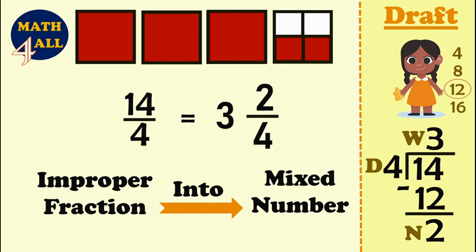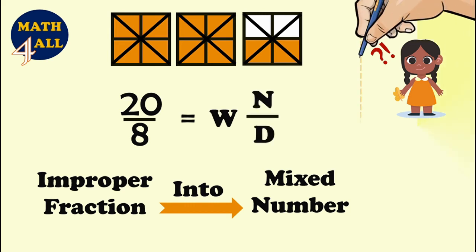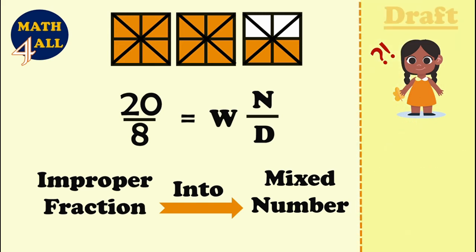Now let's solve one more example. Here we go: 20 over 8. We need to convert it into a mixed number consisting of a whole number, numerator, and denominator. Let's make a draft to show the steps. We will use long division.